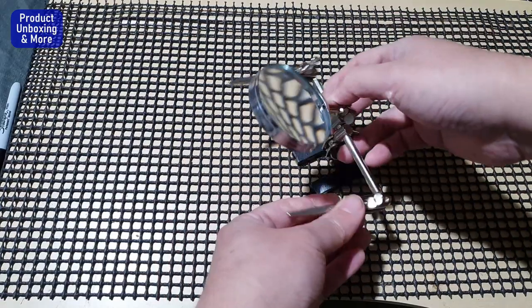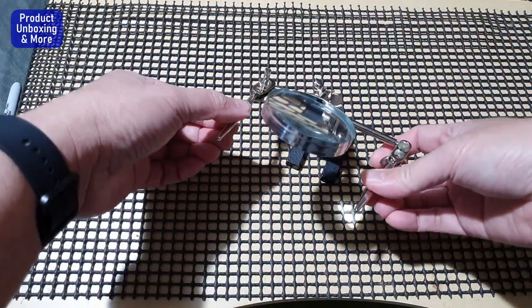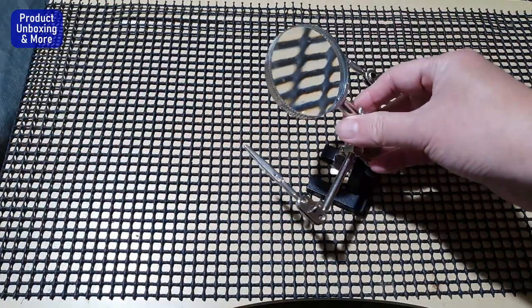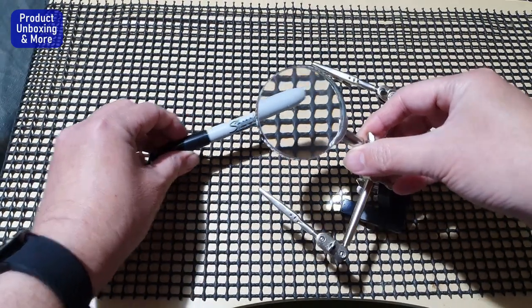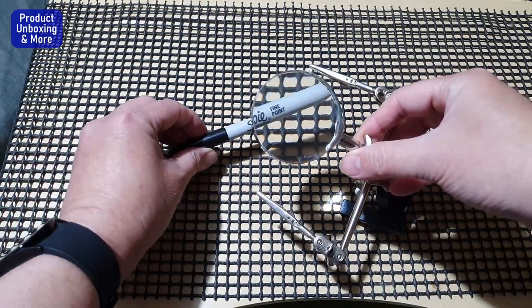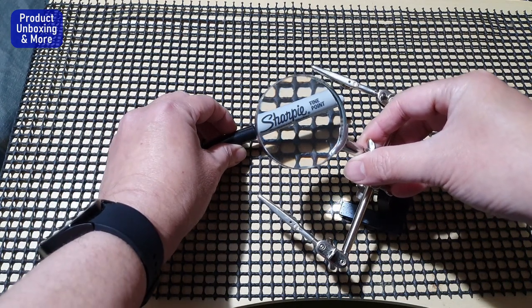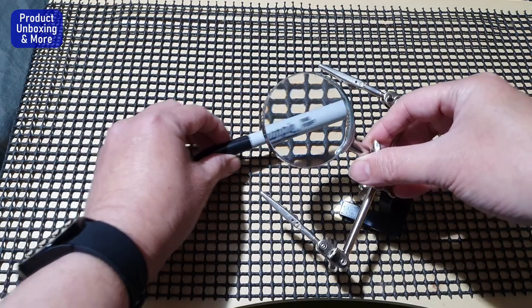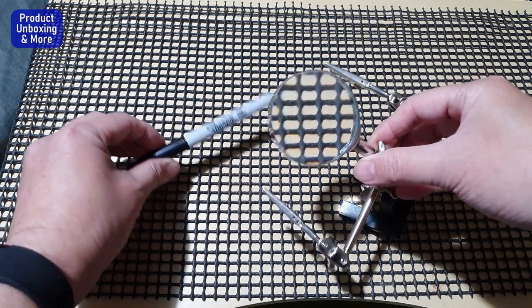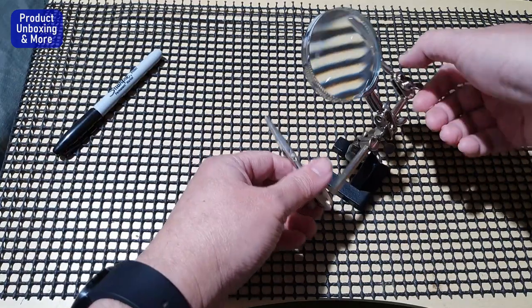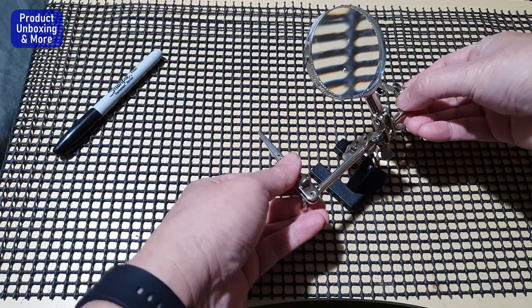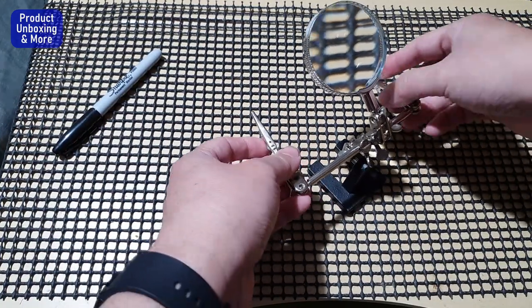Okay, you can see here first I'll show you the magnification. You can see this Sharpie, it's getting bigger. I'm not sure, maybe times four or times three magnification. Then you have your adjustable position for the holder.